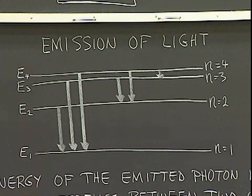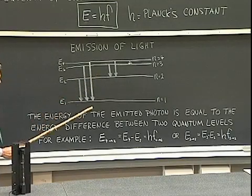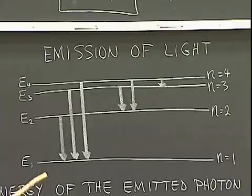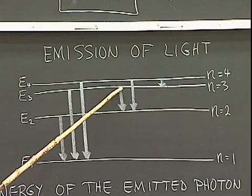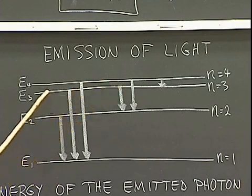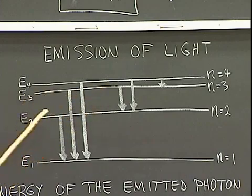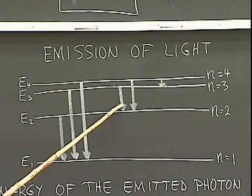If an electron happens to find itself in energy level E2 and drops down to energy level E1, it'll give off a photon of light with a frequency proportional to this energy difference. If an electron finds itself in energy level E3 and drops to energy level E2, a photon will be emitted with a frequency proportional to that energy difference, which is proportional to the length of that line.